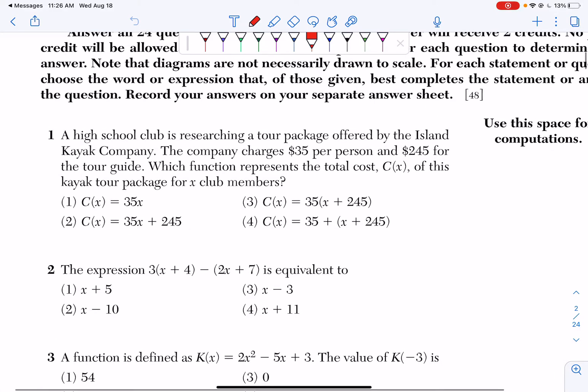I'm going to break apart this problem to show you the key information. What do you think the key information is? The key information is the company's charging $35 per person and $245 for the tour guide.